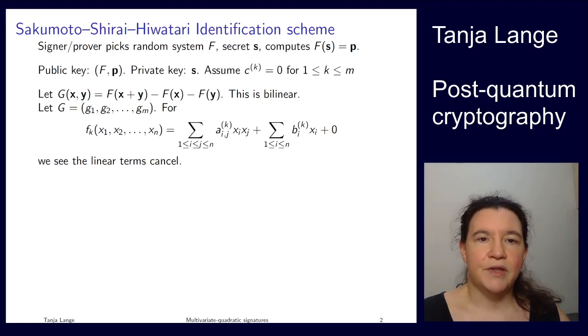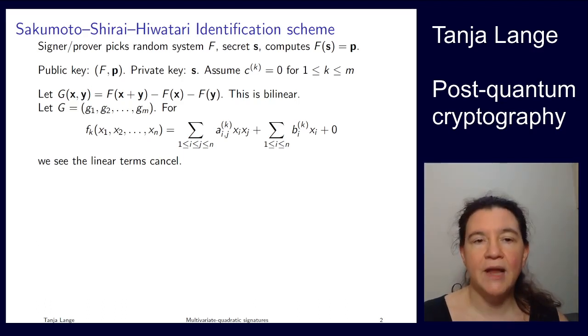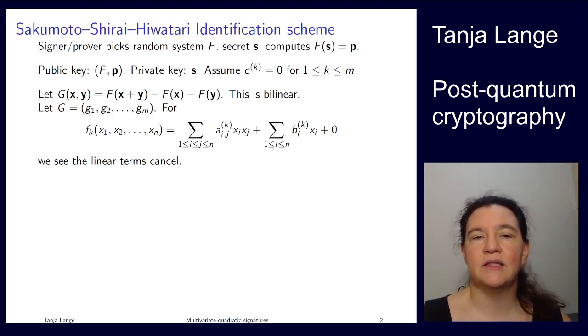So then the first ingredient for that identification scheme is to define this function G, which takes two vectors, x and y. Both of those are length n vectors. We're going to have F evaluated at x plus y, and the definition of G is F at x plus y minus F of x minus F of y.